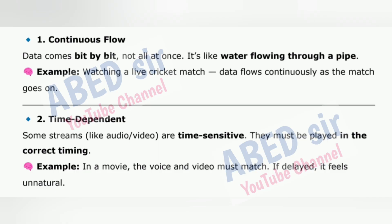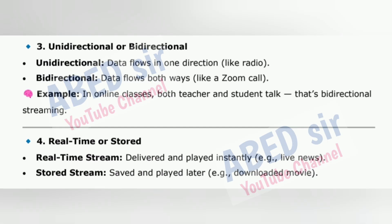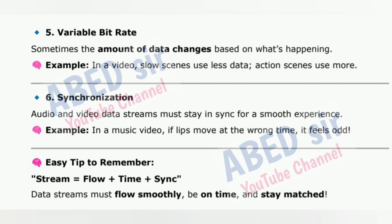2. Time Dependent: Some streams like audio and video are time-sensitive — they must be played in correct timing. Example: In a movie, the voice and video must match; if delayed, it feels unnatural. 3. Unidirectional or Bidirectional: Unidirectional data flows in one direction like radio; bidirectional flows both ways like a Zoom call. Example: In online classes, both teacher and student talk — that's bidirectional streaming. 4. Real-time or Stored: Real-time stream is delivered and played instantly (e.g., live news); stored stream is saved and played later (e.g., downloaded movie). 5. Variable Bit Rate: Sometimes the amount of data changes — slow scenes use less data, action scenes use more.